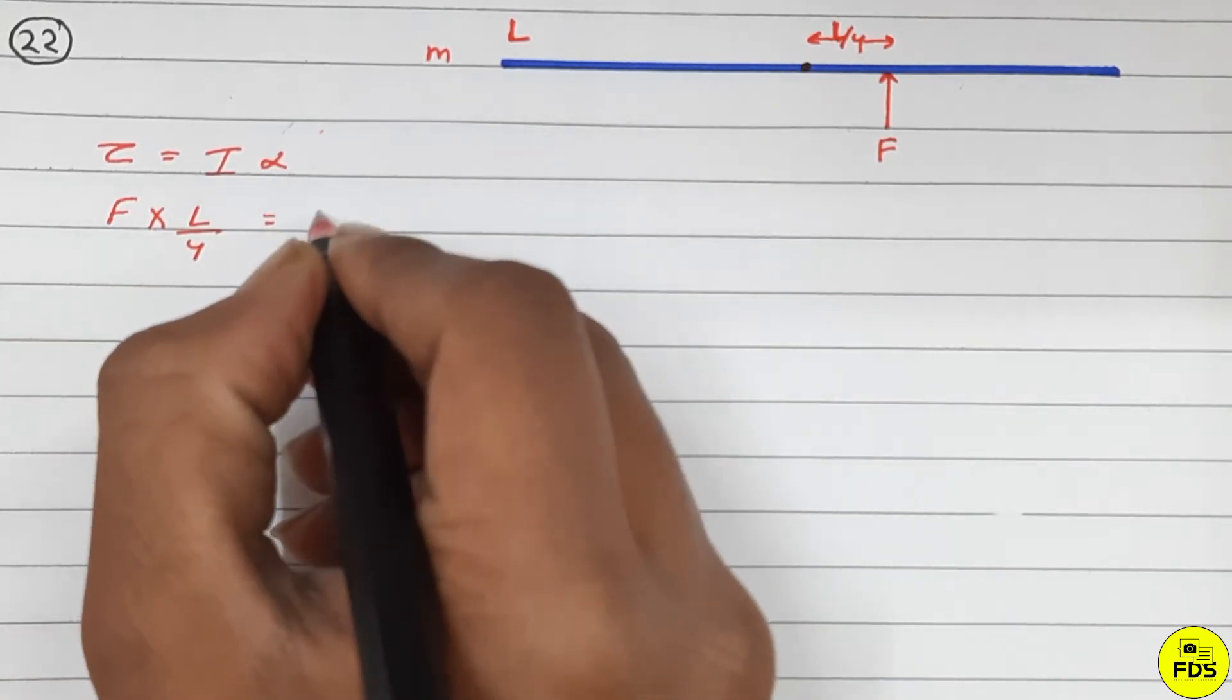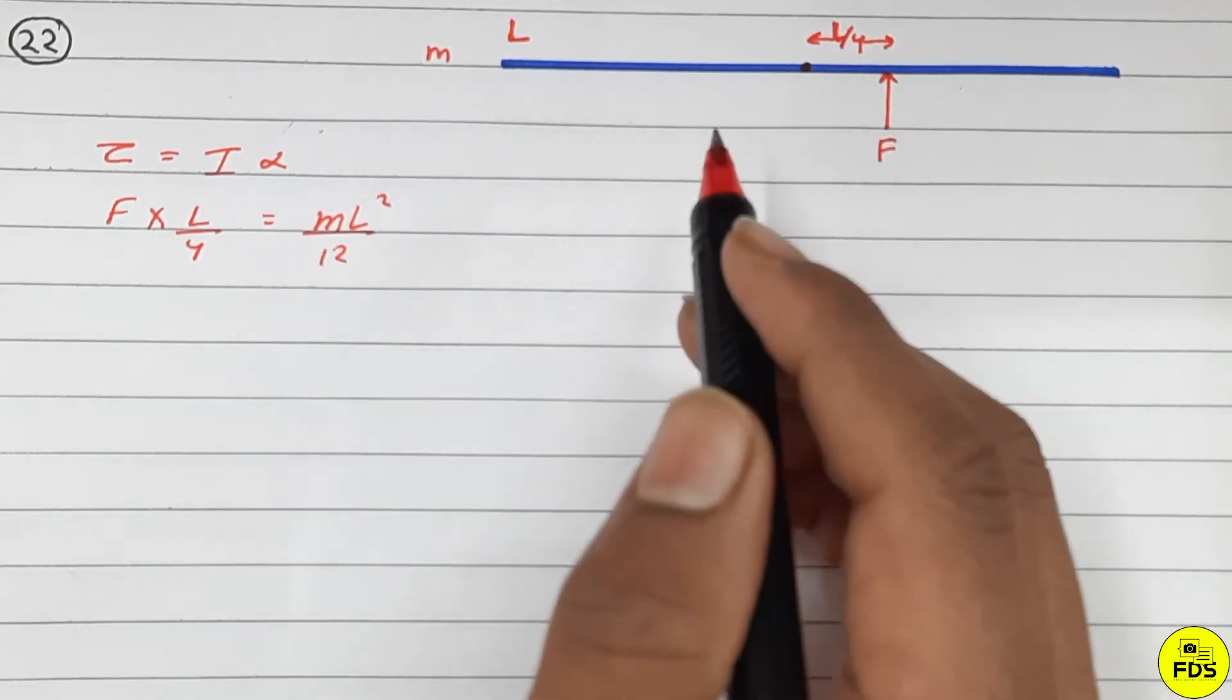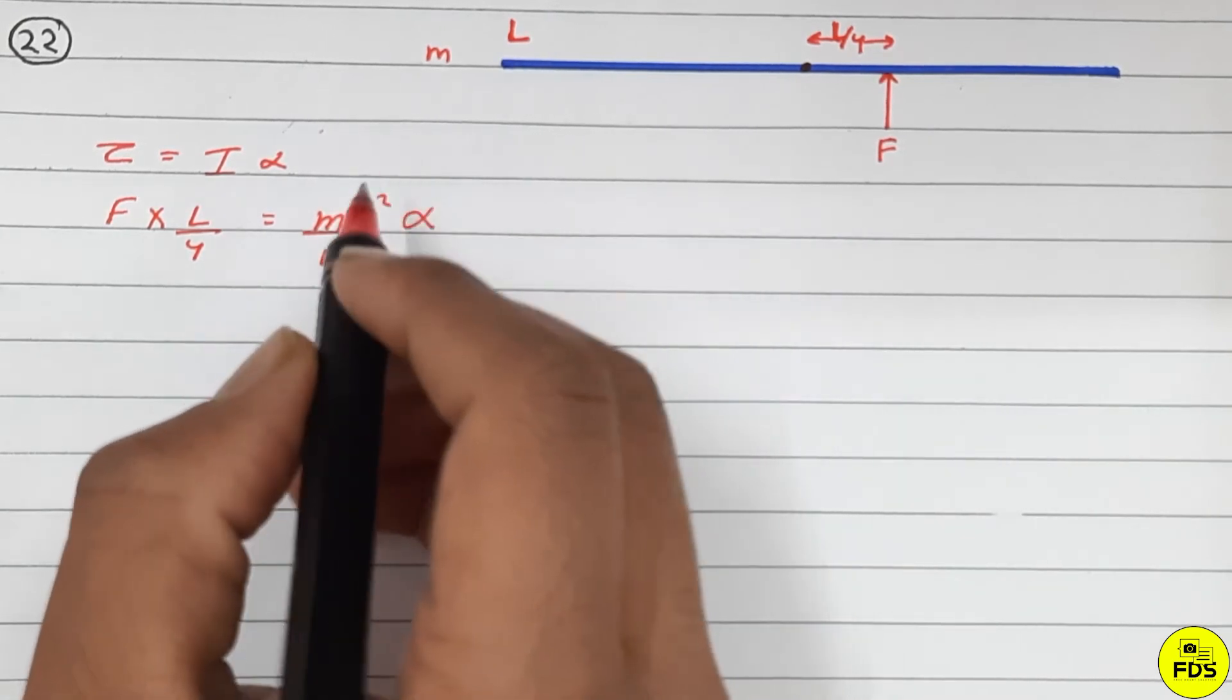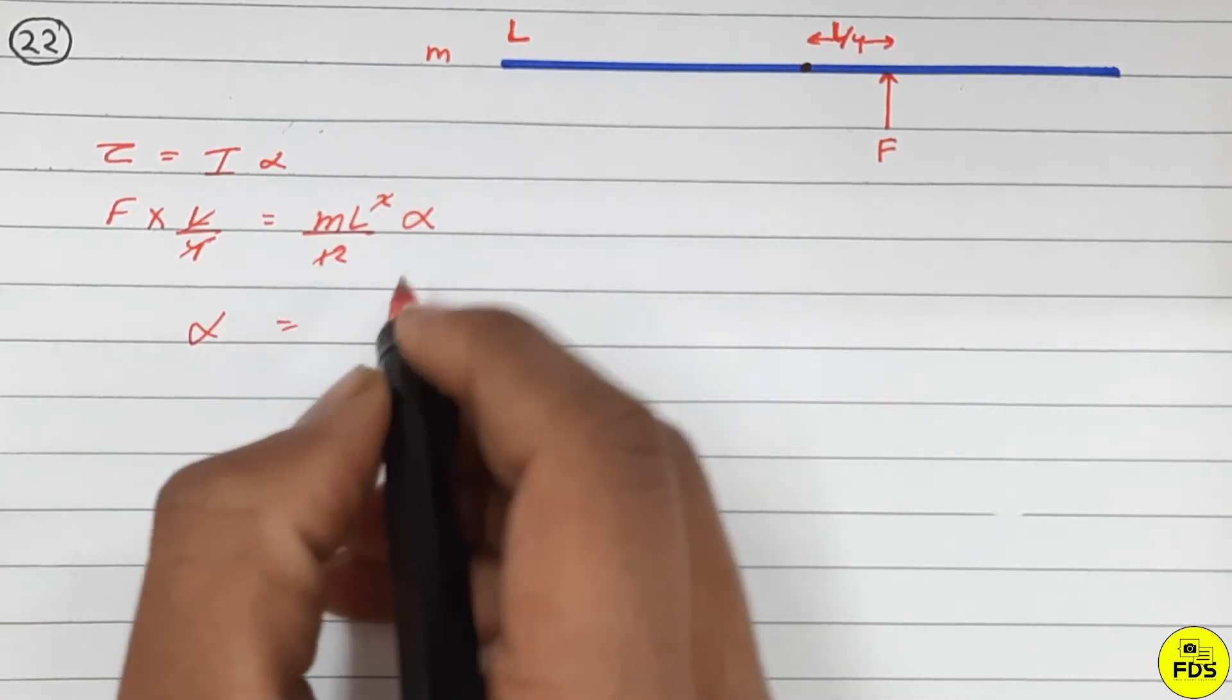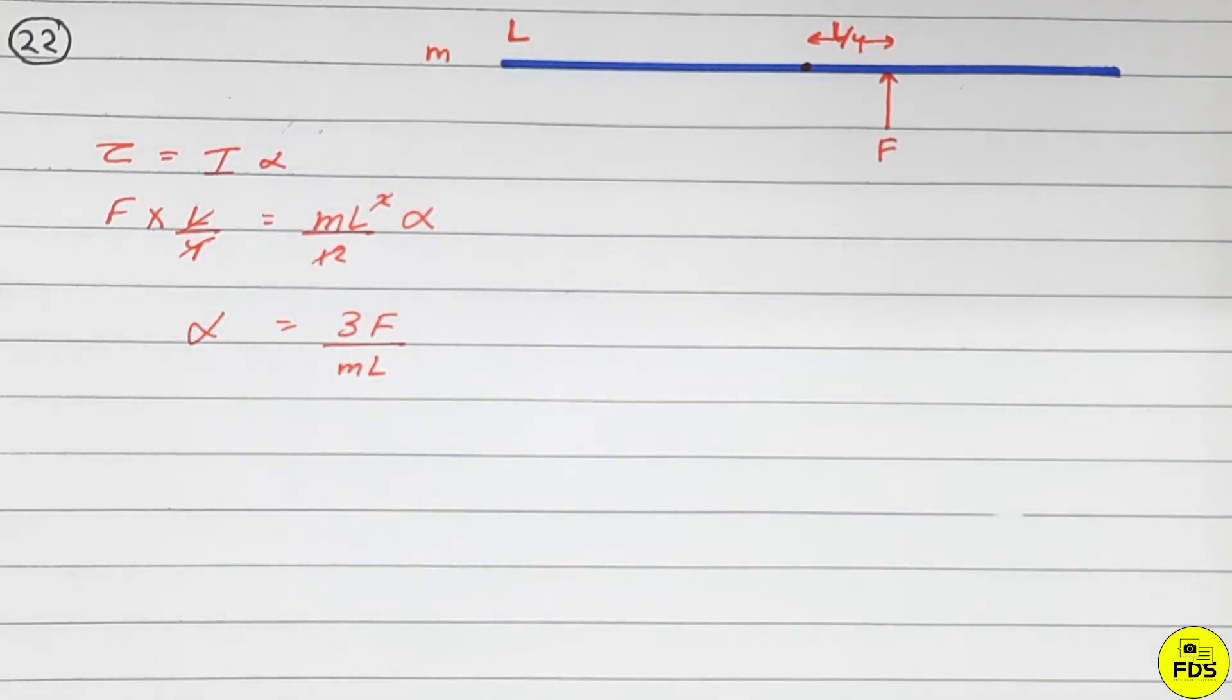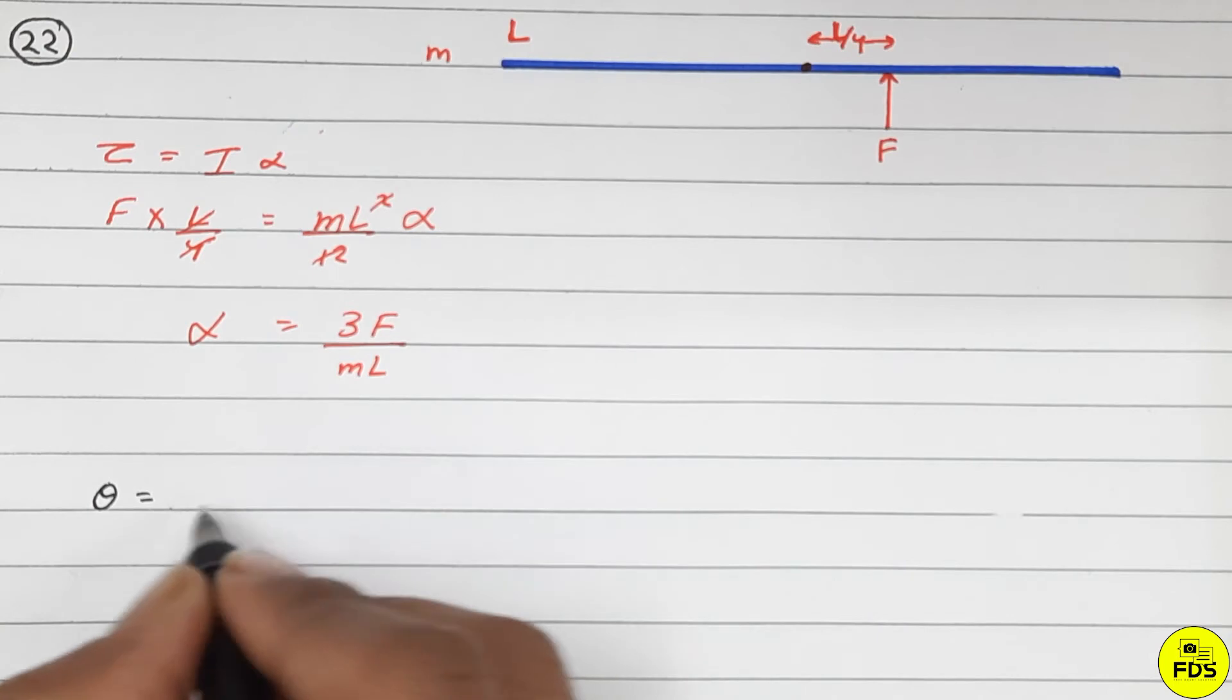I, which is mL squared upon 12. This is our moment of inertia, mL square by 12, times alpha. So alpha equals 3F by mL. This is our angular acceleration.